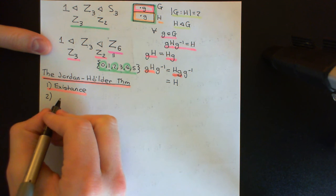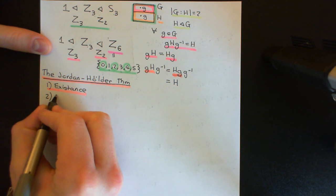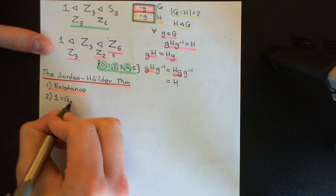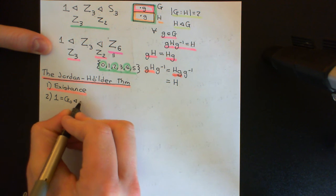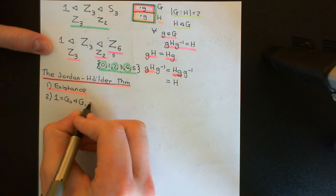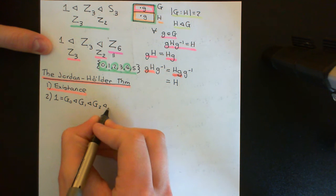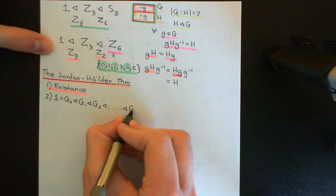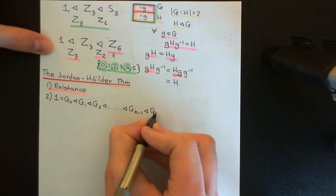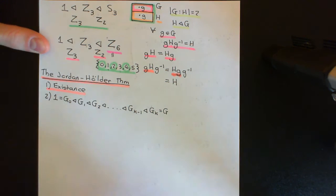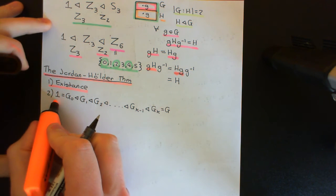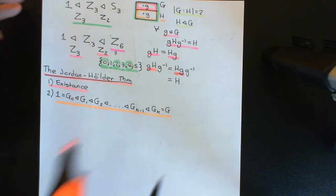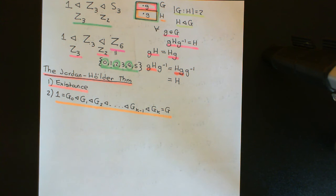So let's say we do have two different composition series for our finite group. The first one uses G's: G₀ representing the trivial subgroup, which is a proper normal subgroup of G₁, then G₂, all the way up to Gₖ₋₁ and Gₖ, which equals the improper subgroup G. The reason there can exist more than one composition series is that there is not necessarily just one maximal normal subgroup inside your finite group — there might be lots of them.